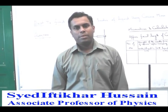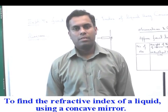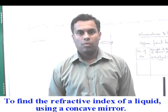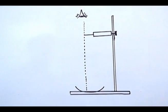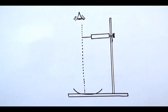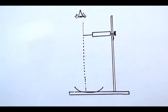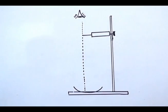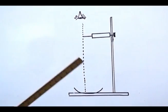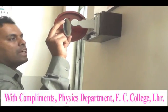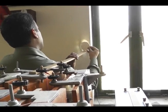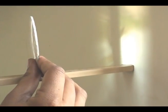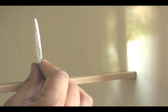Today we are going to perform the experiment to find the refractive index of a liquid using a concave mirror. The apparatus used to perform this experiment includes a stand, mirror, and needle. We will find the approximate focal length of the concave mirror by focusing some image or light — this is step one.